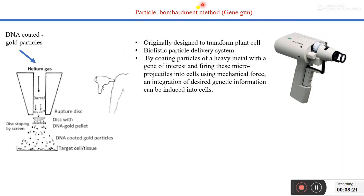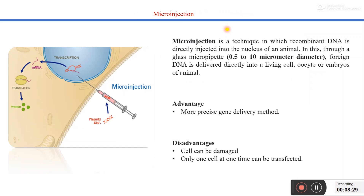That is all about the particle bombardment method of gene transfer. The next physical method of gene transfer is micro injection. In micro injection, we transfer or insert our gene of interest inside the nucleus or other intracellular spaces — such as mitochondria or chloroplast — by using a glass micro pipette of around 0.5 to 10 micrometer diameter. The main advantage of this method is that it is one of the more precise gene delivery methods.